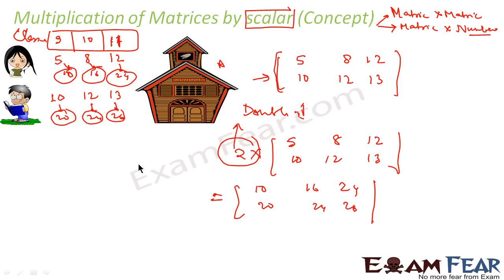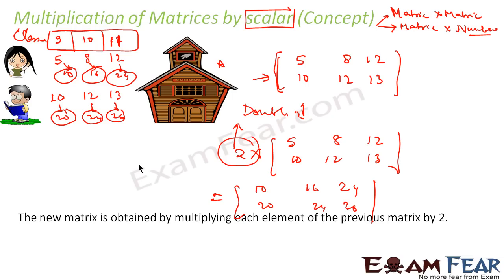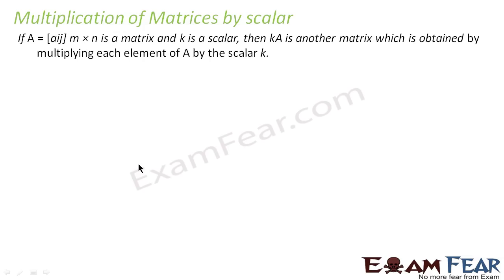When we say multiplication of a matrix by a scalar, we mean we just multiply each and every element of the matrix with that scalar quantity. Now let's understand the mathematical definition: if we have a matrix A with elements a_ij of order m×n and k is a scalar, then kA is another matrix of order m×n, obtained by multiplying each element of A by k.